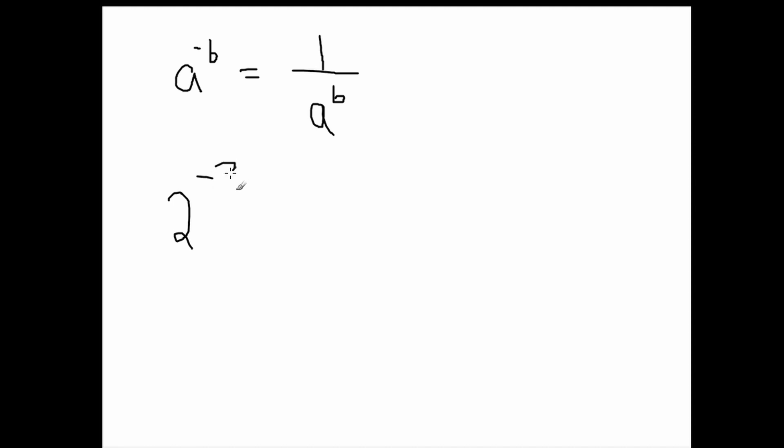Let's have an example. So we have 2 to the negative 3. That will equal 1 over 2 to the 3. And 2 times 2 is 4, 4 times 2 is 8. So that will equal 1 over 8.